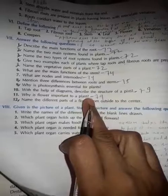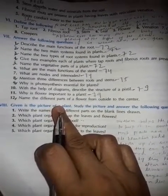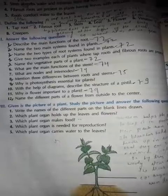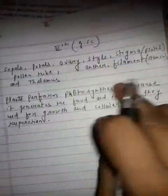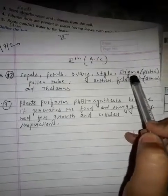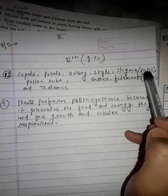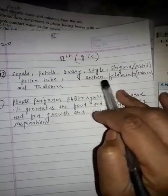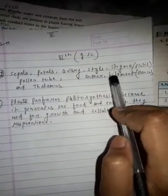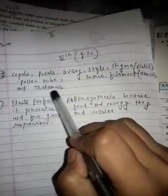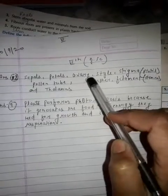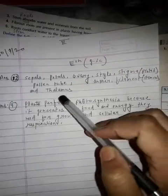Answer twelve: name the different parts of a flower from outside to the center. Answer: sepals, petals, then ovary, style, and stigma — together called the pistil. Pollen tube, anther, and filament — anther and filament are called the stamen. And thalamus.